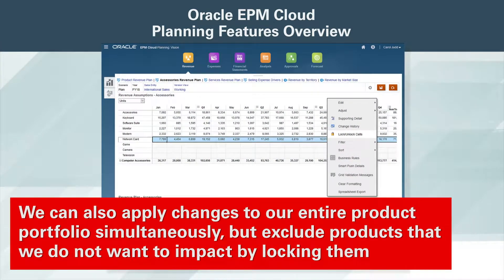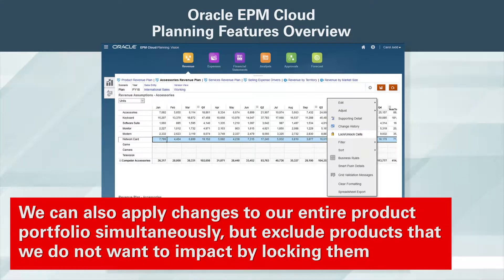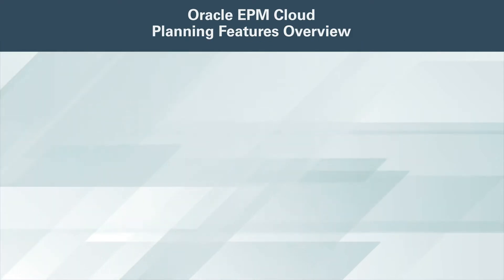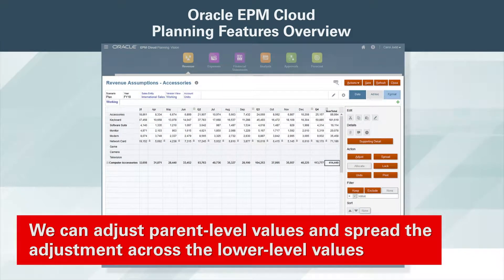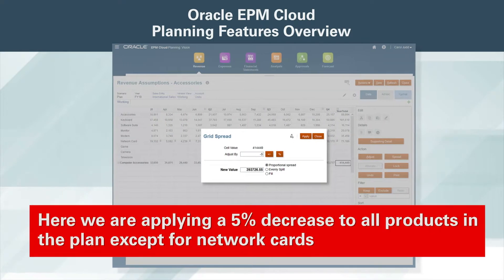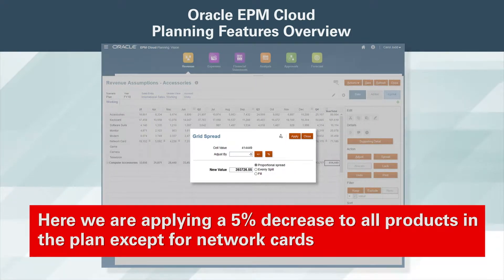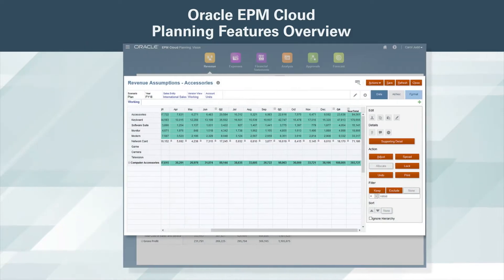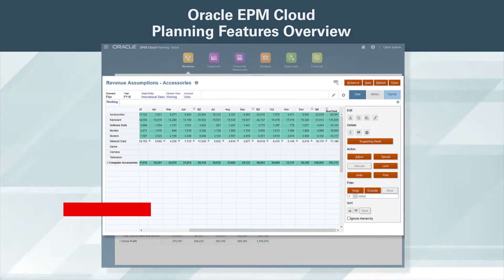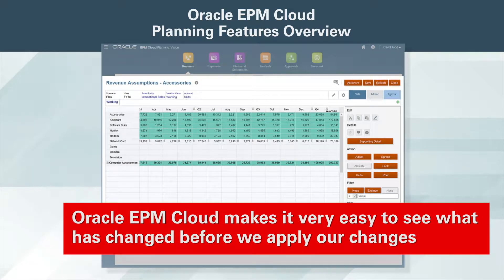We can also apply changes to our entire product portfolio simultaneously, but exclude products that we do not want to impact by locking them. We can adjust parent level values and spread the adjustment across the lower level values. Here we are applying a 5% decrease to all products in the plan except for network cards. The modified values turn green.